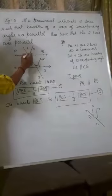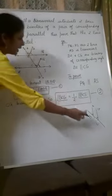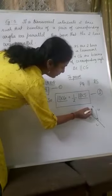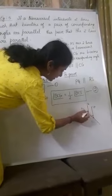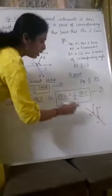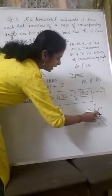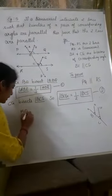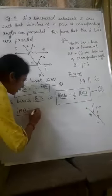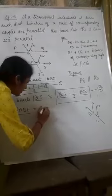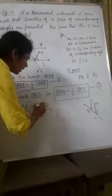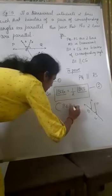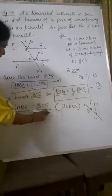Now, BE and CG are parallel lines, cut by the transversal AD. Since these two are parallel lines cut by a transversal, these two will be corresponding angles, and corresponding angles are equal. That is, angle ABE is equal to angle BCG, because they are corresponding angles — the reason being BE parallel to CG.